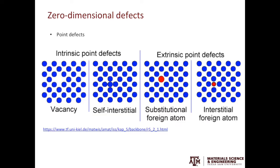Starting from the zero-dimensional defects. In the first case, let's assume it's a pure material with no foreign atoms. If we take one atom away, that creates a vacancy. If we squeeze an atom into the lattice, that creates the self-interstitial.